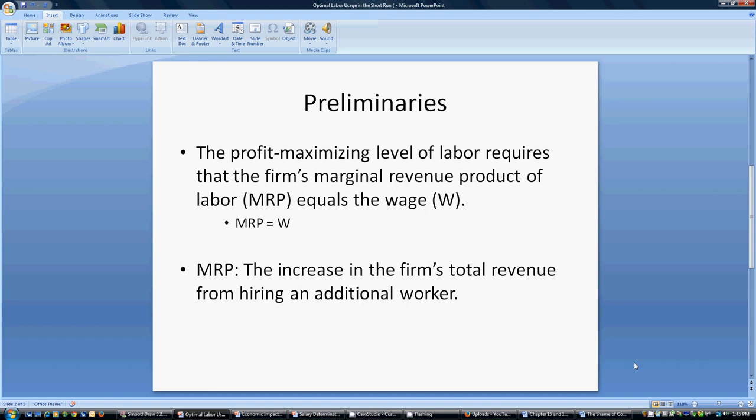Here are some preliminaries. The profit-maximizing level of labor requires that the firm's marginal revenue product of labor, MRP, equals the going market wage rate, W. The condition can be simplified as MRP equals W. For a firm to do this, they will be maximizing their profit, hiring the appropriate amount of the labor input.